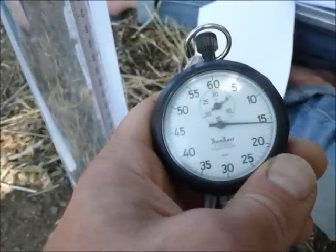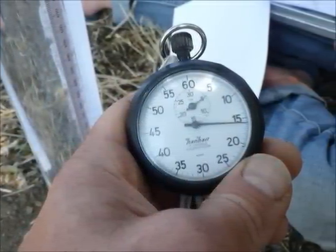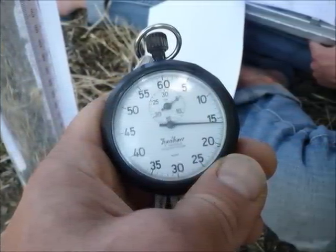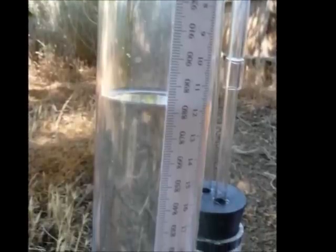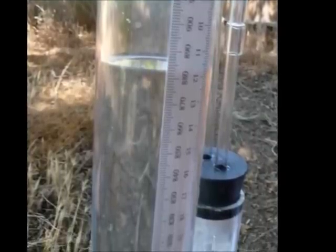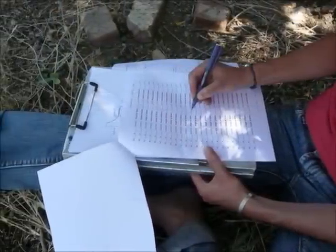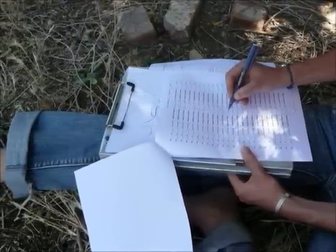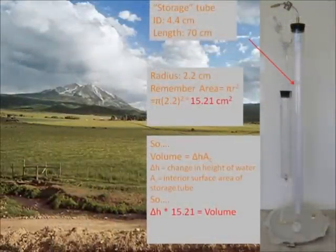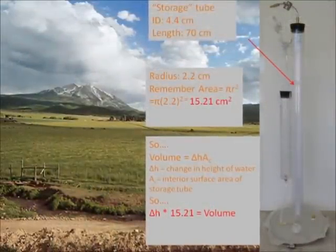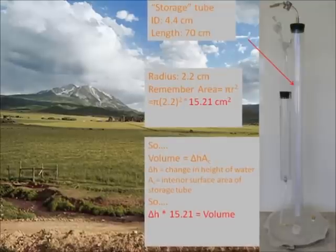Immediately start the stopwatch and at the pre-established time intervals note the water level. The volume of water input into the soil column should also be noted at each time interval.